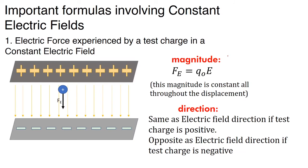Now, important formulas involving constant electric fields. The electric force experienced by a test charge in a constant electric field is Fe equals Q-naught times E. What is special here is that this force magnitude is constant throughout the displacement — unlike a point charge source where force constantly changes. Between two metal plates where E is constant, Fe is also constant, meaning the acceleration is constant.